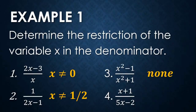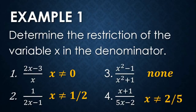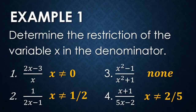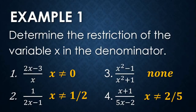For number four, we equate 5x − 2 to zero, transpose negative two, and divide both sides by five. The restriction is x = 2/5. x cannot equal 2/5 because that would make the denominator equal to zero. That is how you determine the restriction on the variable x in the denominator.